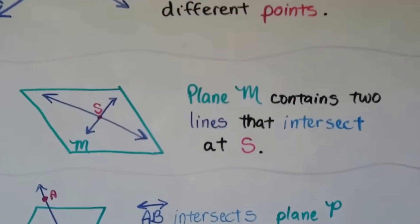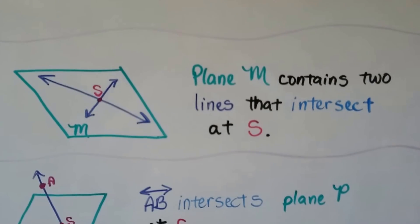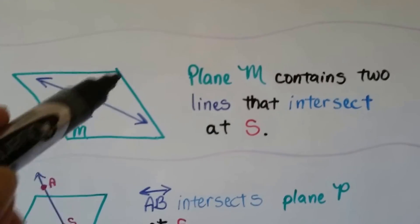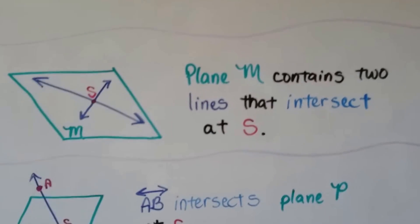Here we have plane M contains two lines that intersect at S. This is plane M, and the two lines intersect at S.